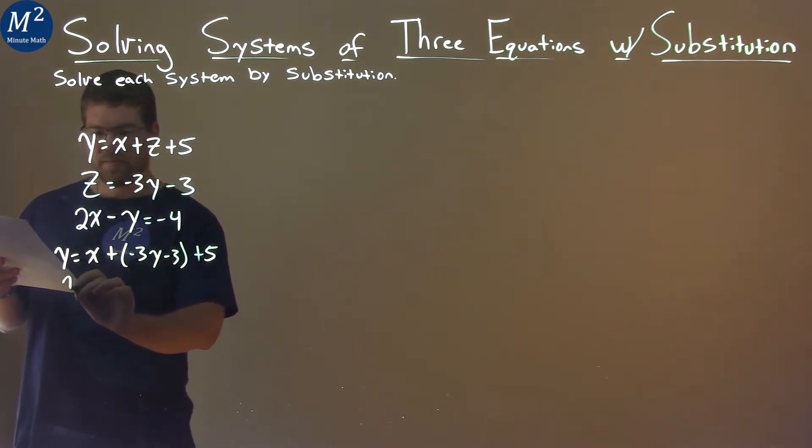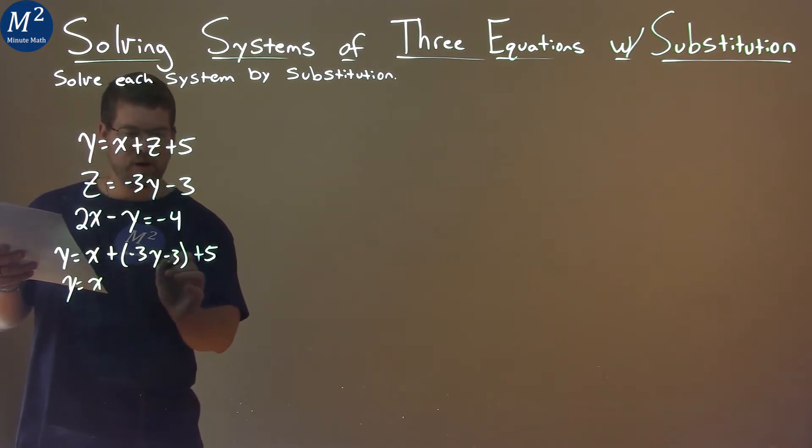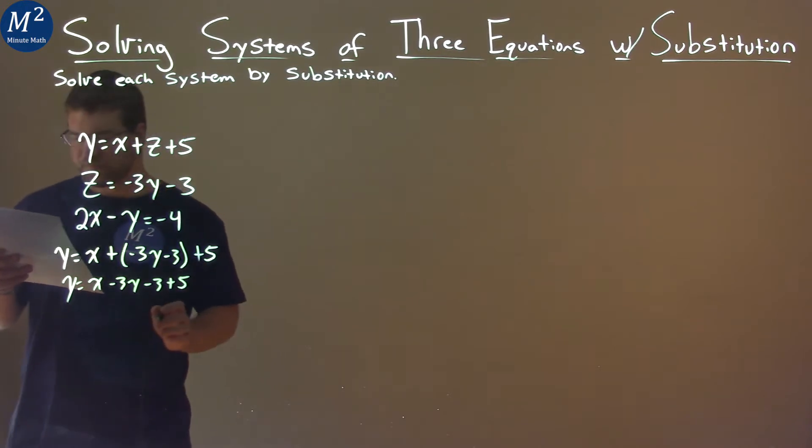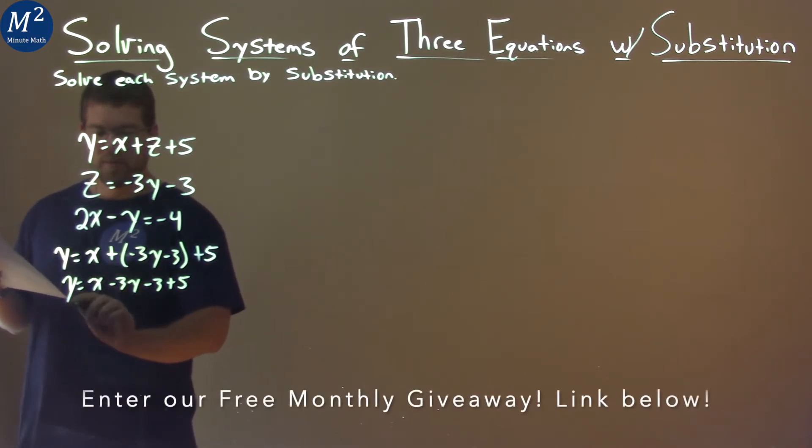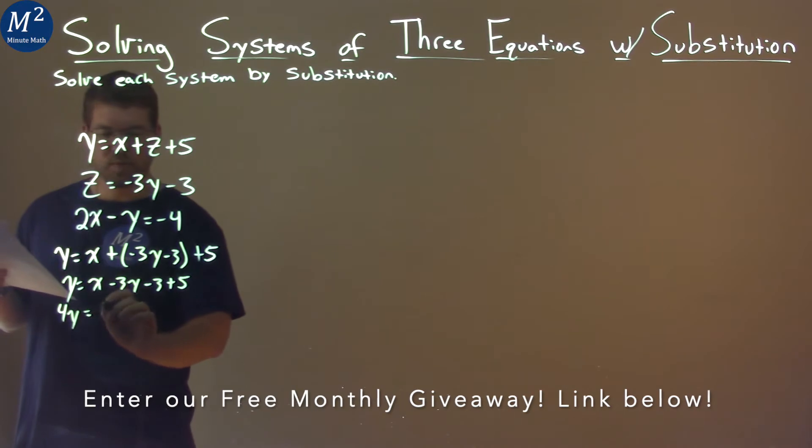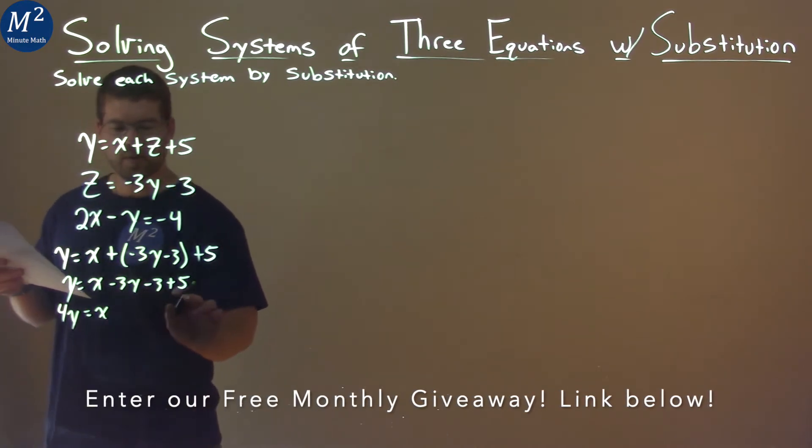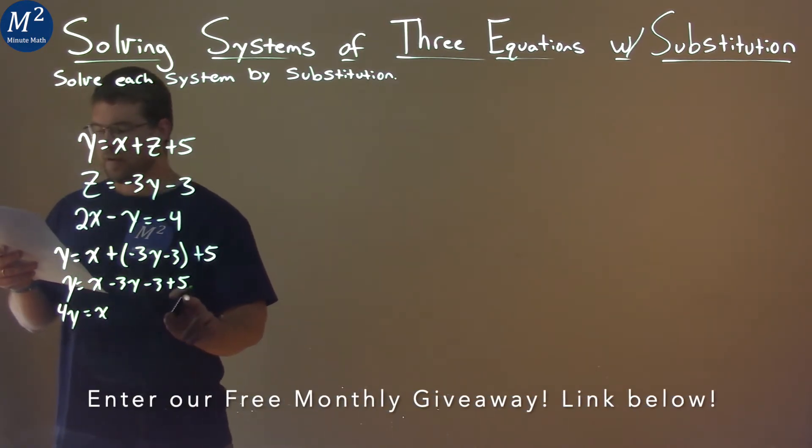So we have y equals x minus 3y minus 3 plus 5. Now let's combine our like terms. I'm going to add 3y to both sides, and by doing that I have 4y equals x, and then minus 3 plus 5 is a positive 2.